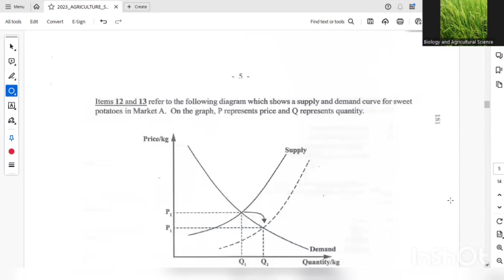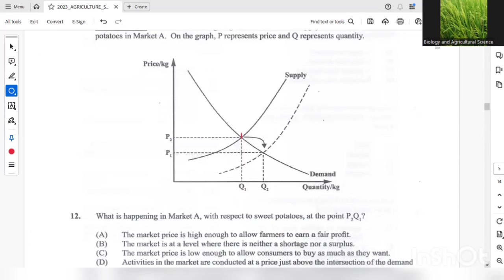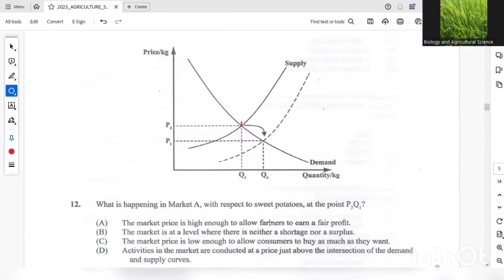Question 12 and 13 refers to this diagram here. We have a supply and demand curve for sweet potato in market A. On the graph, P represents the price and Q represents the quantity. So what happens in market A with respect to sweet potatoes at point P2Q1? The correct answer should be B. The market is at a level where there is neither a shortage or surplus. And you should notice that at this point here, we have the equilibrium point. So you have an intersection of supply and demand.